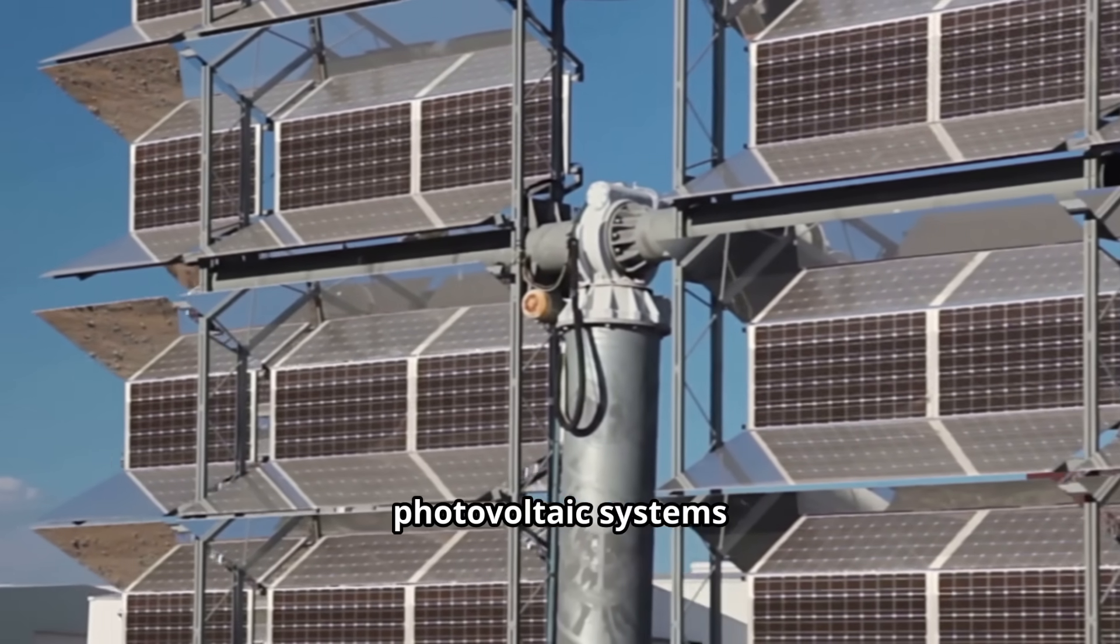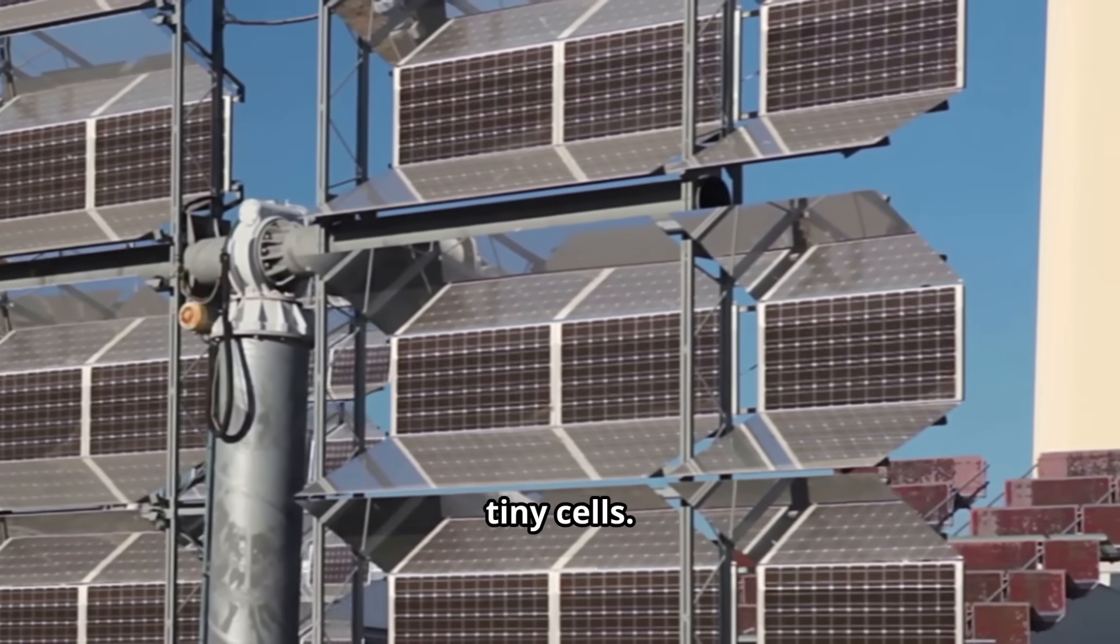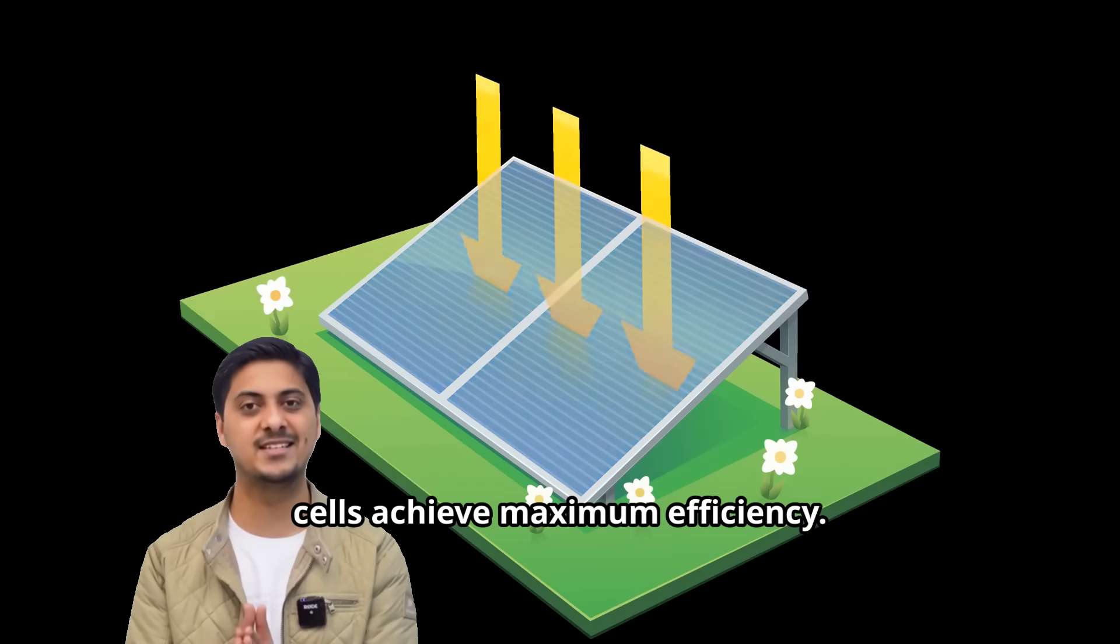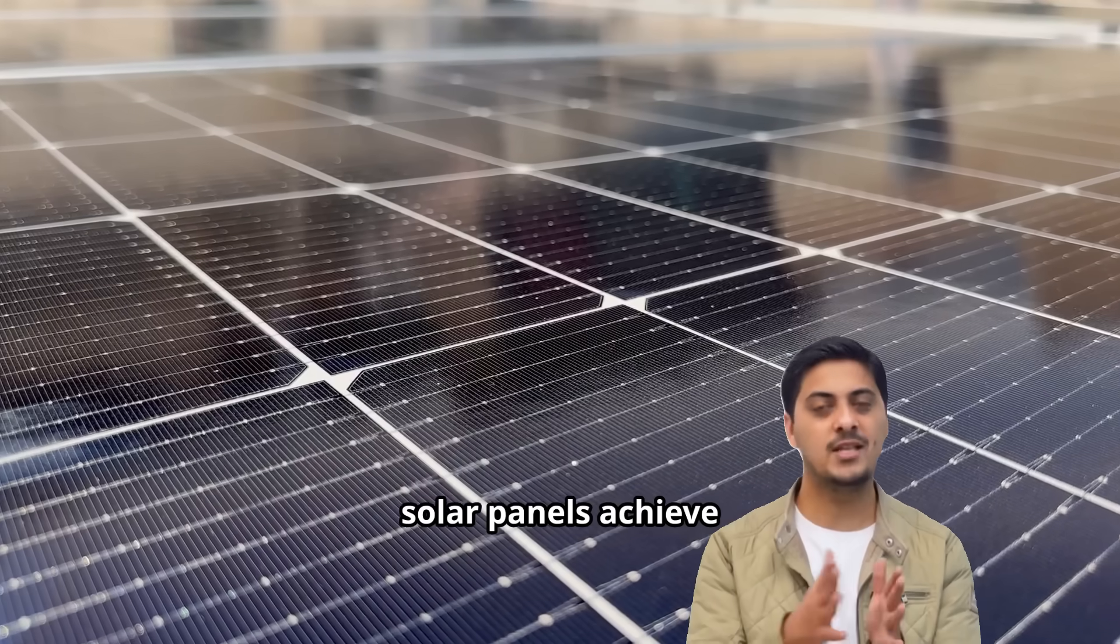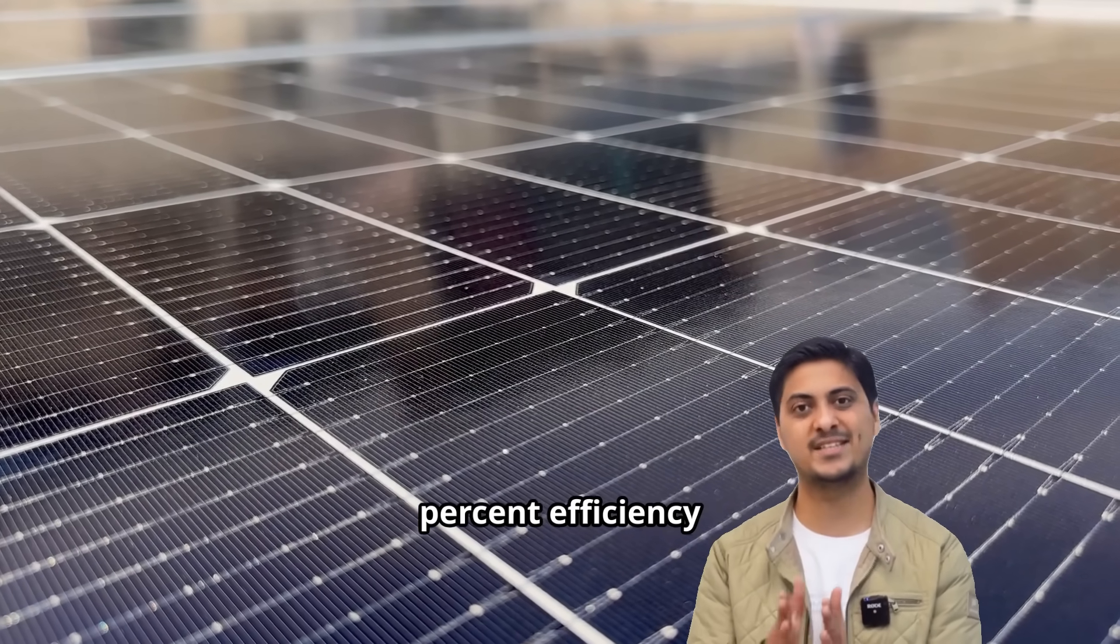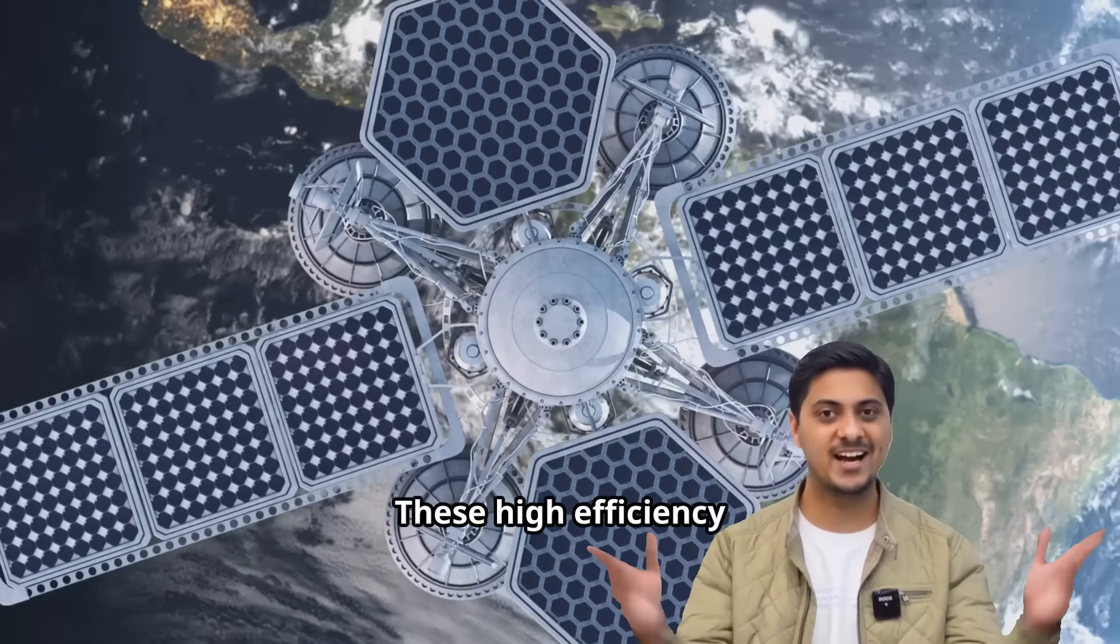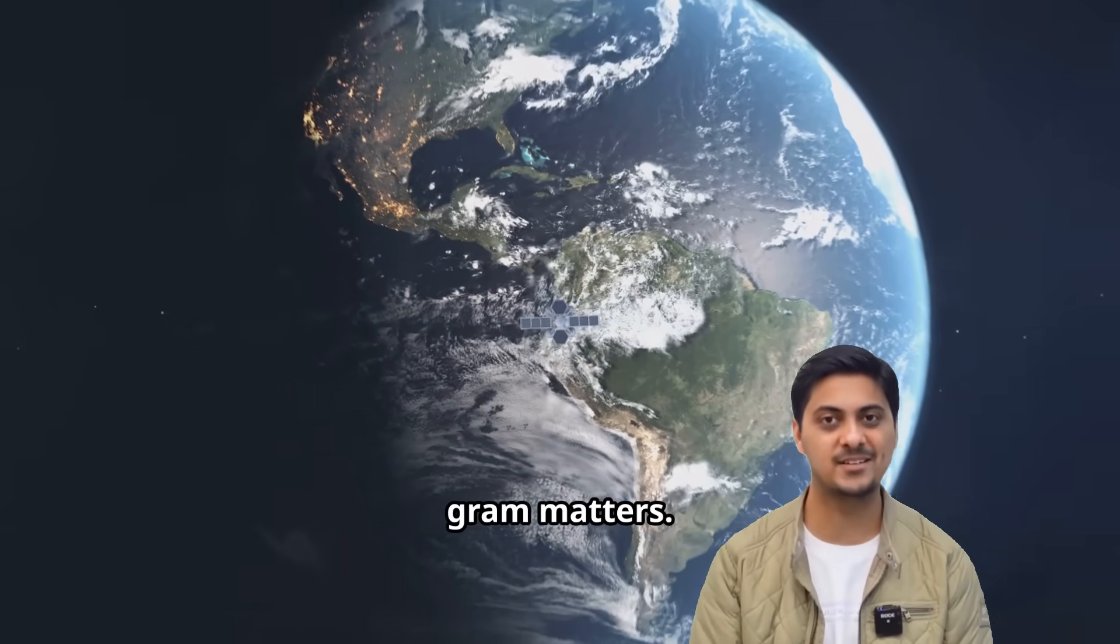Concentrated photovoltaic systems use special lenses or mirrors to focus sunlight onto these tiny cells. Under 143 times concentrated illumination, these cells achieve maximum efficiency. While traditional solar panels achieve 15-22% efficiency, these reach 47%. These high-efficiency cells are perfect for spacecraft where every gram matters.